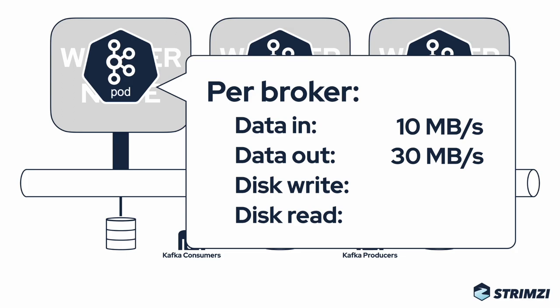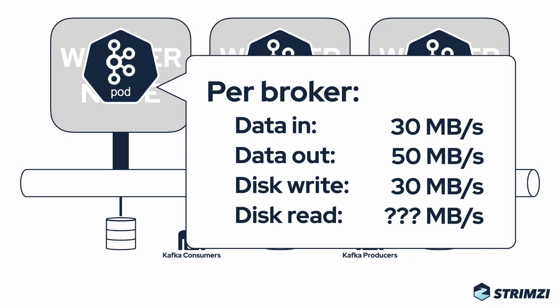And the other way around, we need to receive the data from those other two brokers to keep our replicas up to date. So in reality, data in will be 30 megabytes per second and data out will be 50 megabytes per second. Of course all the data need to be written to disk as well, so disk writes will need another 30 megabytes per second. Disk reads depend on many factors — are consumers reading only the latest messages cached in memory? Even counting just data in, data out, and disk writes, you get quite a lot of traffic for a fairly small amount of produced data.